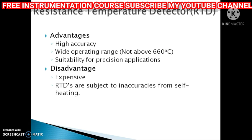The last part of this lesson covers the advantages and disadvantages of RTD. Advantages include: first, high accuracy — the platinum RTD has a linear relationship and gives accurate results depending on the measurement circuitry. Second, wide operating range — the standard RTD operates from minus 200 degrees to 660 degrees Celsius, with 660 degrees achievable using platinum RTD. Third, suitability for precision applications — due to high immunity to electrical interference and long-term stability, RTDs give very precise readings.